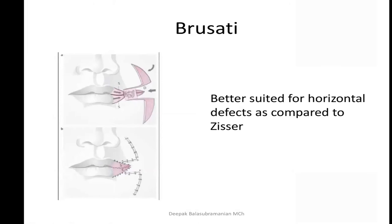The Brusati flap is better for horizontal defects compared to the Scissor flap. Triangles of skin are removed to facilitate the advancement; the flap is elevated and advanced into the commissure defect; the skin here is incised and turned over to reconstruct a new commissure. The Scissor and Brusati flaps are the two flaps used for isolated commissure reconstructions, though it is very rare to find tumors with only isolated commissure involvement.